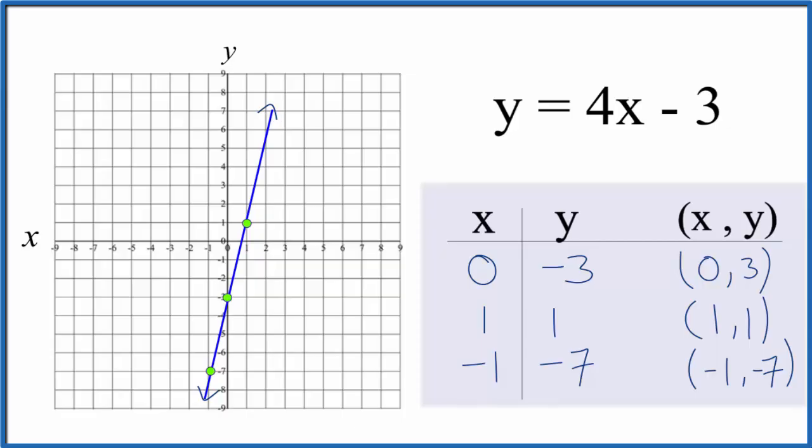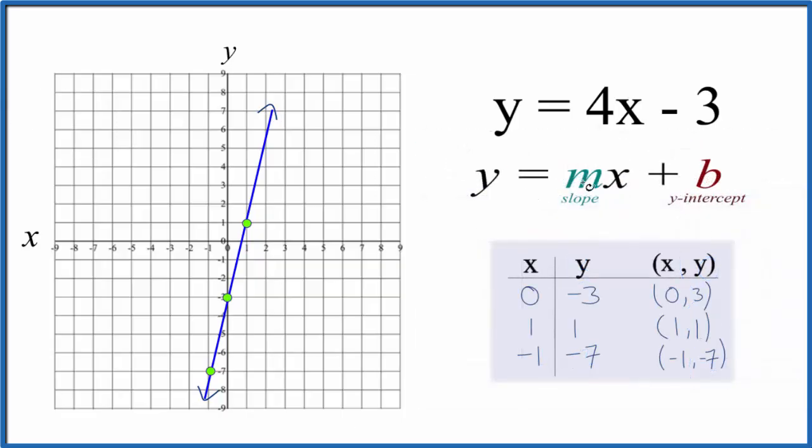Let's check our work with the slope-intercept formula. So if y = mx + b, then b, that's the y-intercept, is -3. That's where we're going to cross the y-axis, right here at -3. So that's on our line.